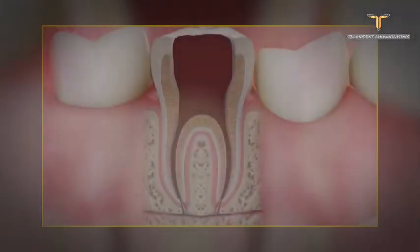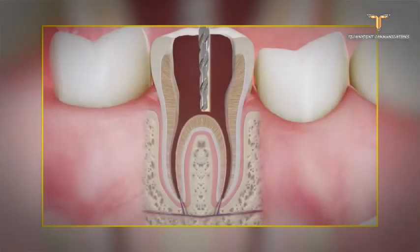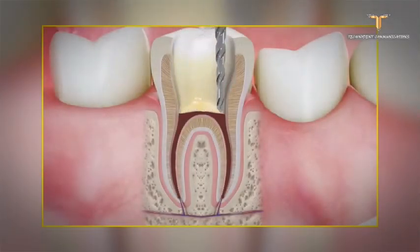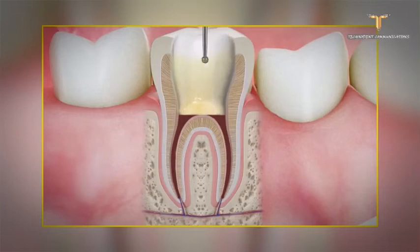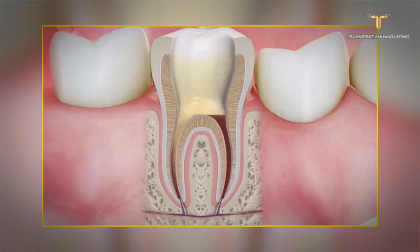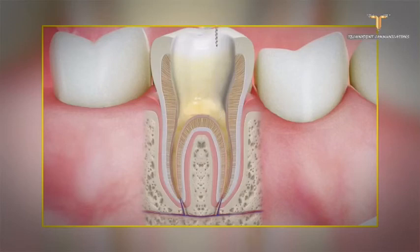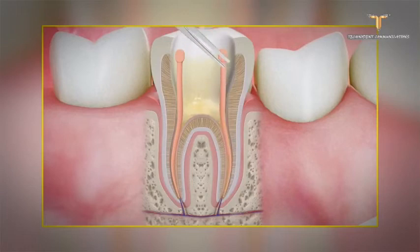A plastic shield called a rubber dam is then used to isolate the tooth, preventing it from coming into contact with saliva. A hole is made in the crown with a drill, removing the decayed portion to reach the pulp chamber. The canals are then disinfected to remove debris, and the pulp is removed from the canals using dental files. The endodontist then cleans and shapes the canals.